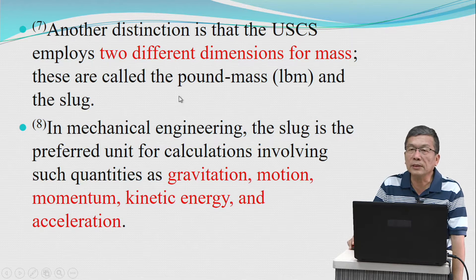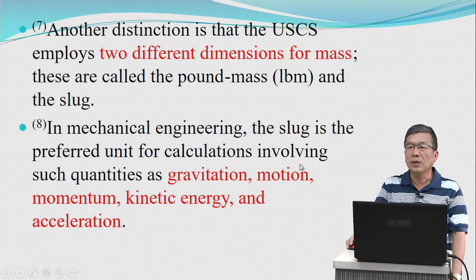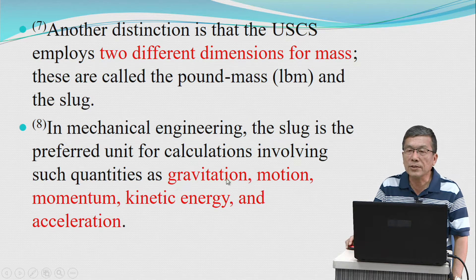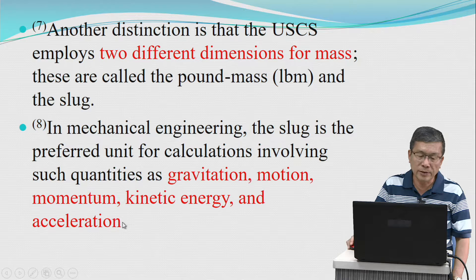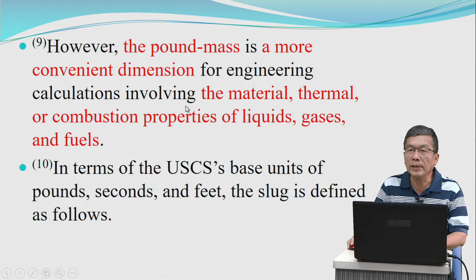Another distinction is that the United States customary system employs two different dimensions for mass. These are called the pound mass and the slug. In mechanical engineering, the slug is the preferred unit for calculations involving quantities such as gravitation, motion, momentum, kinetic energy, and acceleration. However, the pound mass is the more convenient dimension for engineering calculations involving the material, thermal, or combustion properties of liquids, gases, and fuels.